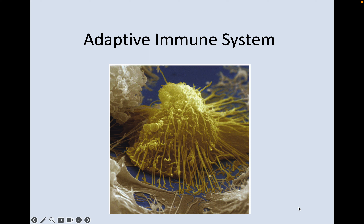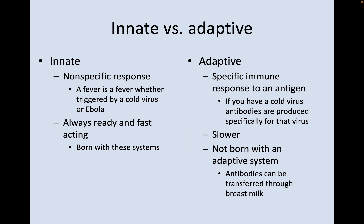Today we're going to be talking about chapter 15, the adaptive immune system. There are two things we need to consider here: innate versus adaptive immune systems. An innate immune response is nonspecific — a fever is a fever whether it's triggered by a cold virus or by Ebola. It's always ready, fast acting, and you're born with these innate immune systems.